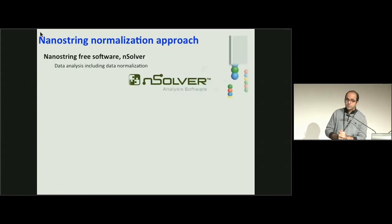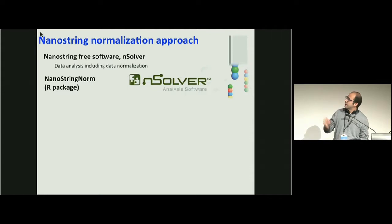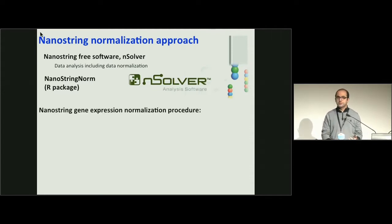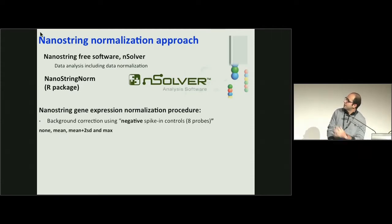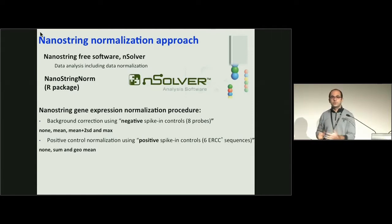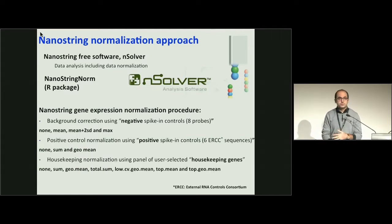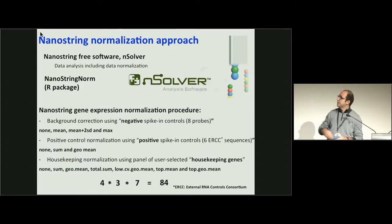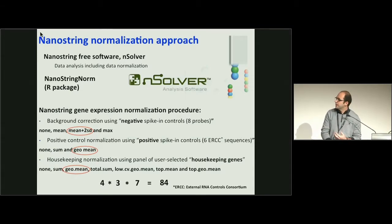I'm going to talk about NanoString normalization approaches. The company provides software called nSolver, and there is an R package called NanoStringNorm to do this analysis. The normalization starts with background correction using NanoString negative spiking controls, then positive control normalization using positive spiking controls. These two controls are useful for removing variation associated with the platform. For adjusting sample-to-sample loading variation, we use housekeeping gene normalization. In total, we have 84 different combinations of these steps. The default option is mean plus two standard deviations for background, geometric mean for positive, and housekeeping normalization.